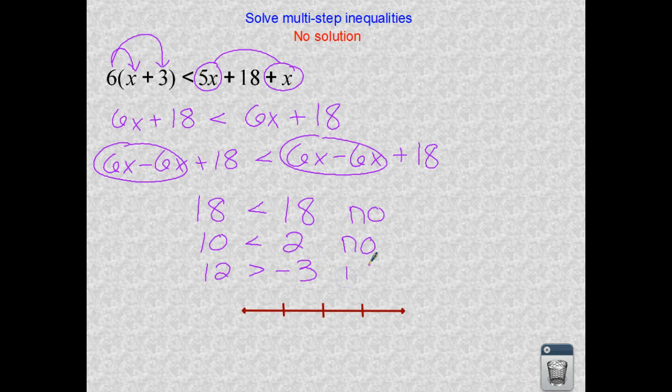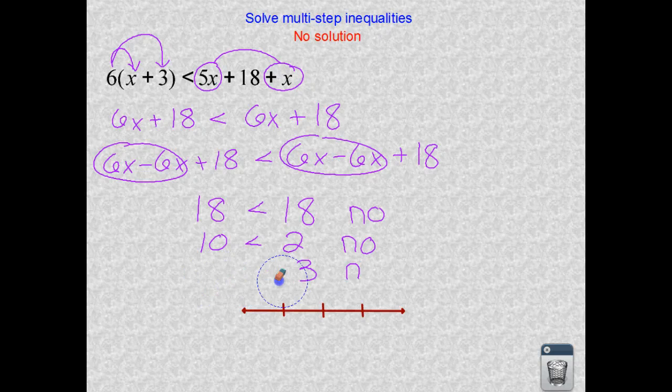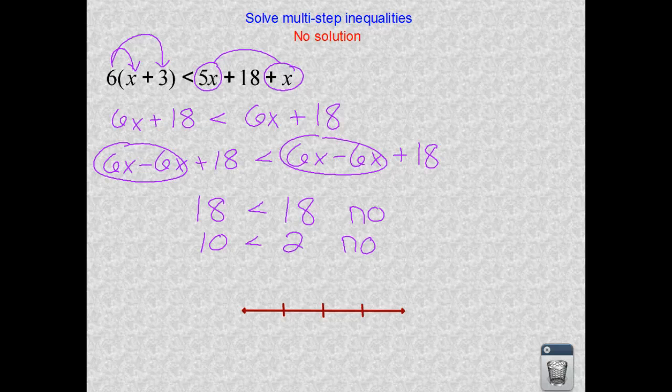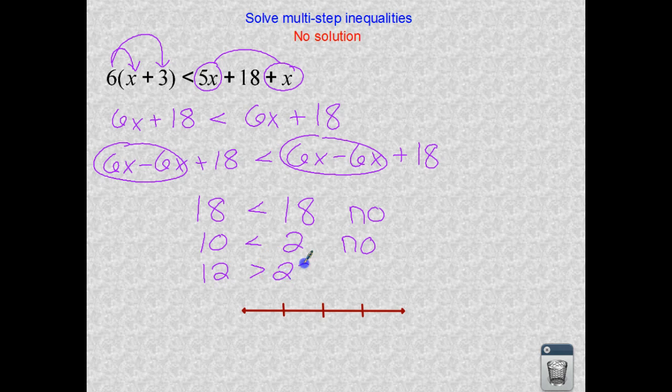Wait a second. I'm silly. 12 is greater than negative 3, so that's not a great example. How about 12 is greater than 20? Is that a true statement? Absolutely not.